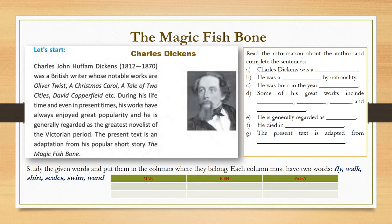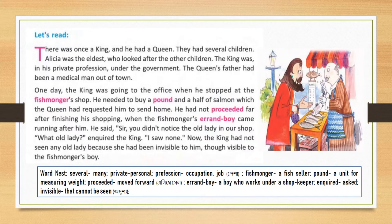Study the given words and put them in the columns where they belong. Each column must have two words. The three columns are: Man, Fish, Fairy. The words to place are: Fly, Walk, Dart, Scales, Ash, Swim, Wand — and wand means magic stick.